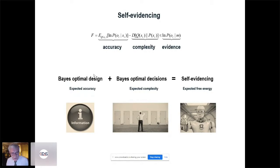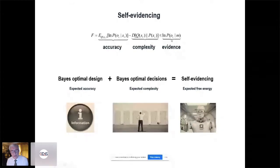Formally, we're going to be talking about an evidence lower bound — also known as variational free energy — that is always less than the log evidence: the probability of some outcomes under a model I might entertain about how those data were generated. I'm going to focus on various ways of decomposing this quantity, which will be the objective function for both perception and action.